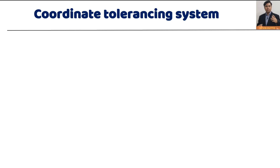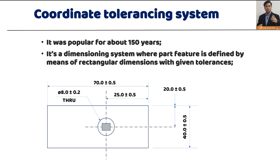Is there any other dimensioning system available apart from Geometric Dimensioning and Tolerancing? Yes — the oldest method is the Coordinate Tolerancing System, which has been used for 150 years. In this system, part features are defined by means of rectangular dimensions with plus/minus tolerances. For example, 25 has ±0.5 and 20 has ±0.5 — that's how we get the location of the hole.